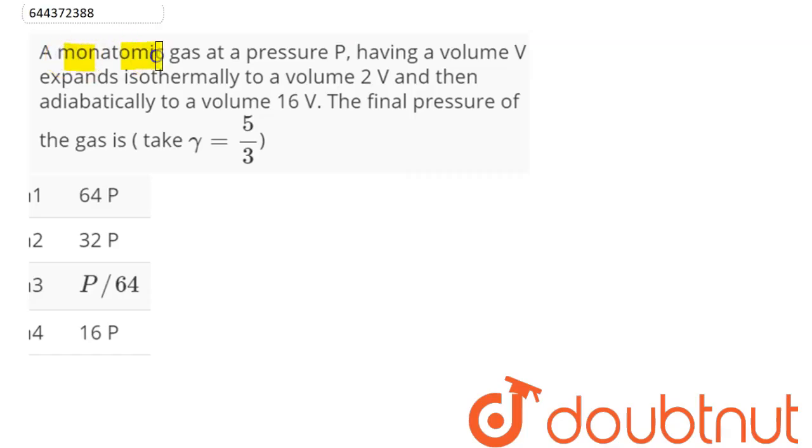Question is: a monatomic gas at a pressure P having a volume V expands isothermally to a volume 2V and then adiabatically to a volume 16V. The final pressure of the gas is, given gamma equals 5 divided by 3.